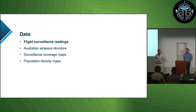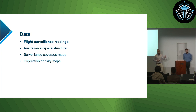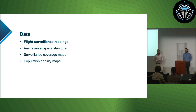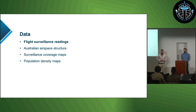In addition to our primary data source, we also have a range of reference data for various assessment types. Some examples include definitions of Australia's airspace structure — what rules apply where — surveillance coverage maps showing where we have surveillance information, as well as population density maps and other geographic rasters.